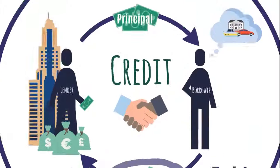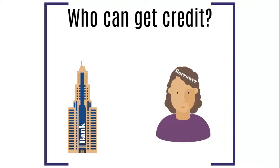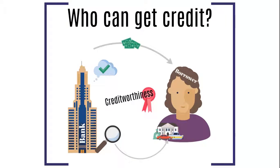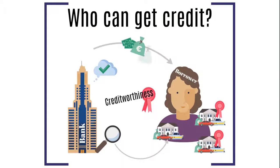But who can get credit? Before banks agree to lend any money, they usually check if the borrower appears to be able to repay. They look for security in the form of property like real estate or other valuable things that the borrower might have. If there are no problems, the borrower is declared creditworthy and the bank lends her the money. It is important to mention that the more a borrower owns, the safer the bank feels and thus is willing to lend her more.